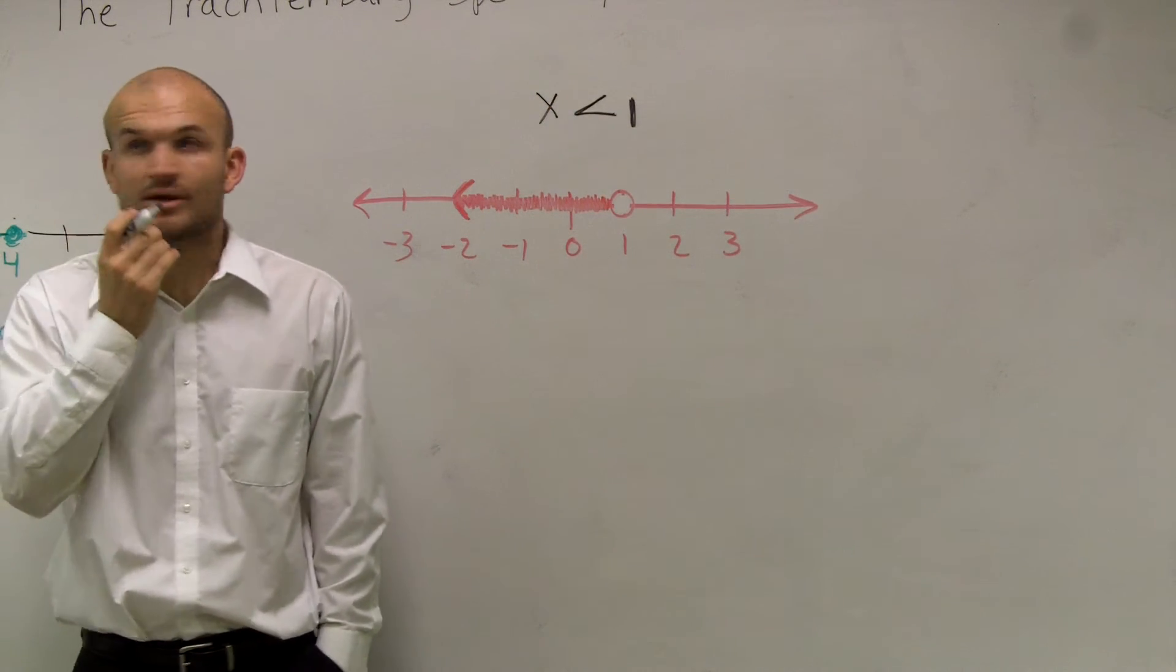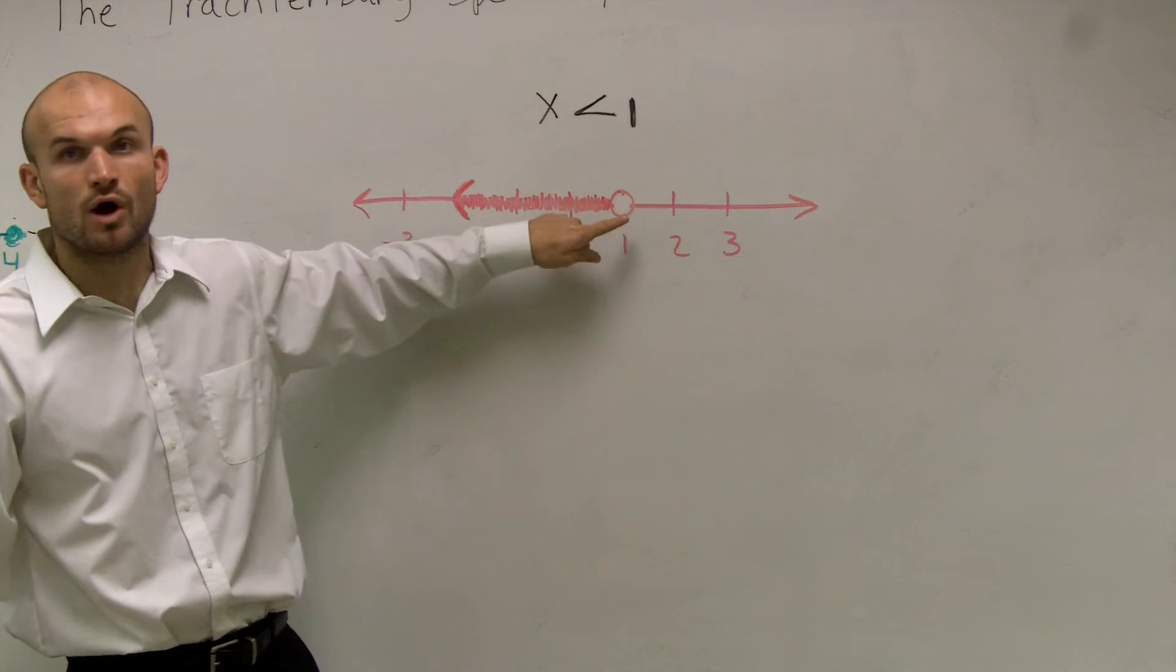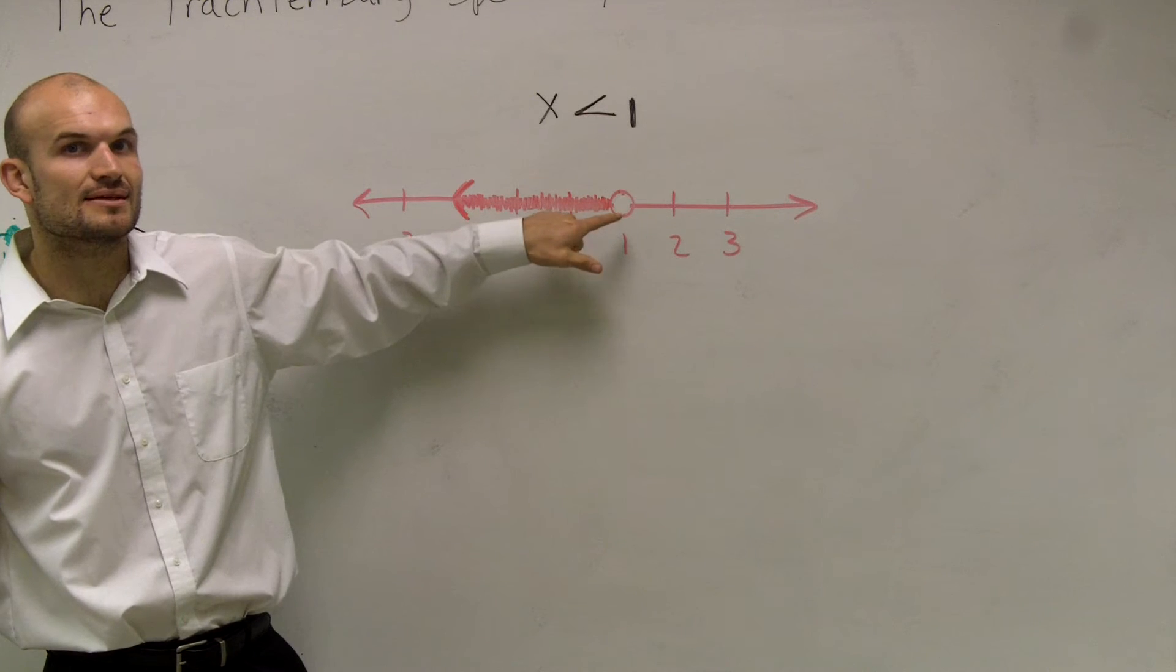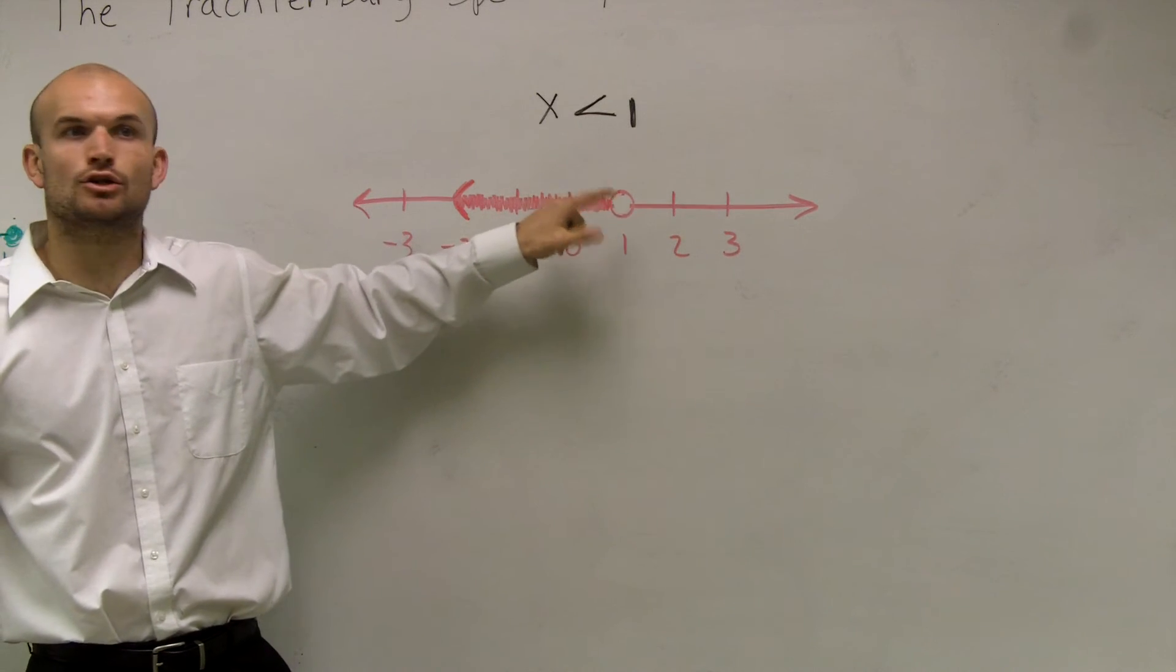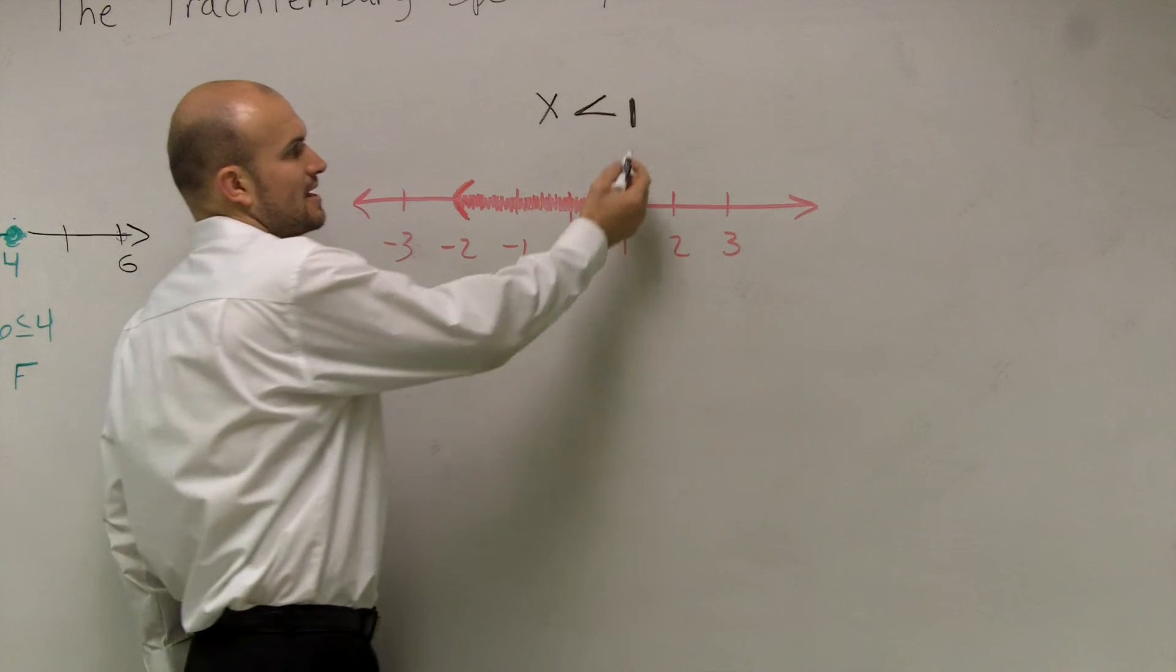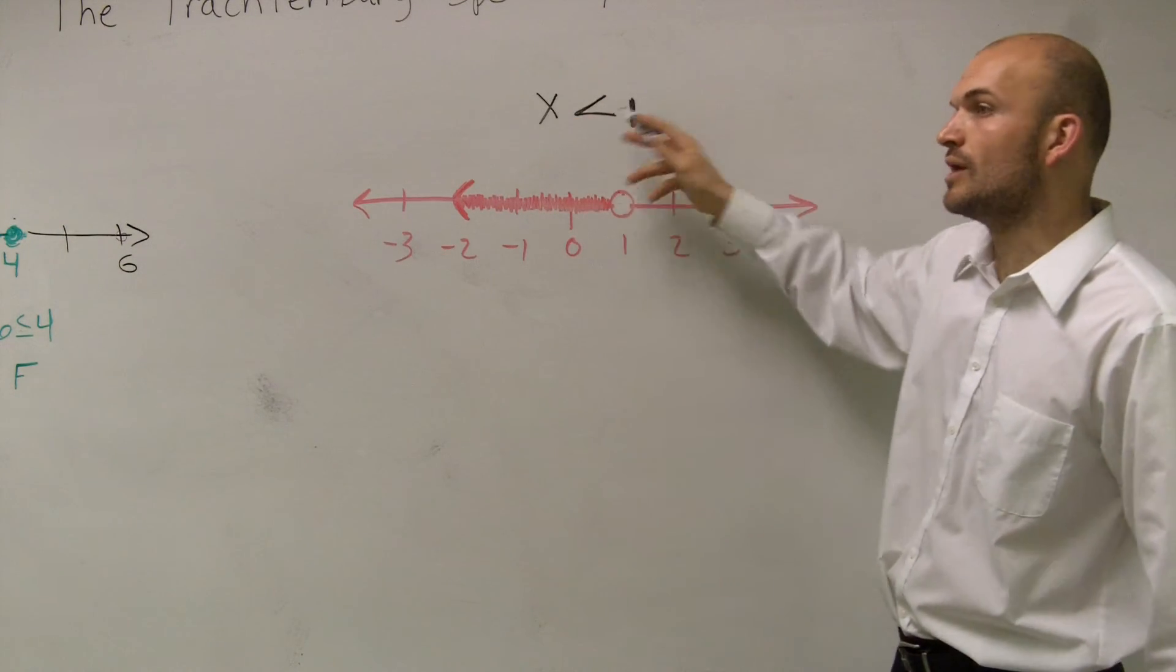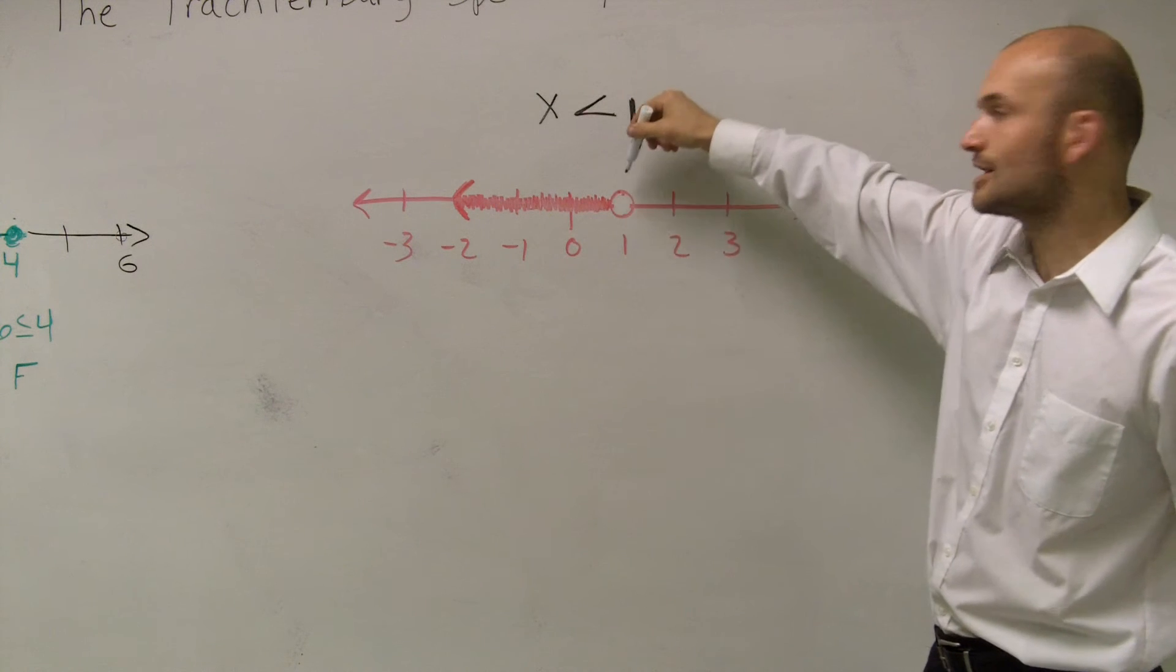Now the final step we need to remember is what about our point 1? Remember, when it's an open dot, that means your graph does not include 1. So we look at this and say, when it's just x is less than 1, that means my point is not included here.